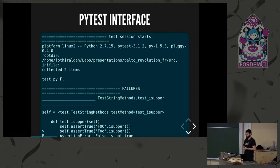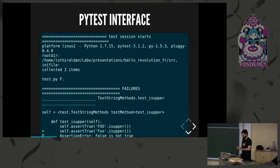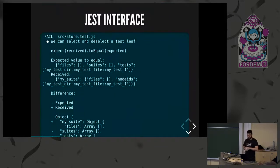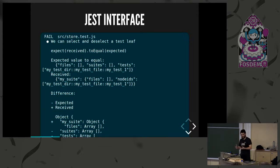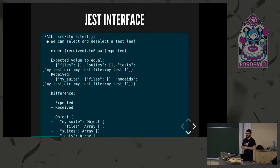When you first come to run tests in Python — for example, with PyTest — there is an interface you can use, but you need to know where to find things. If you move to JavaScript with, for example, Jest, it's a totally different interface. For beginners, it's very hard to use both tools efficiently, at least in the beginning.